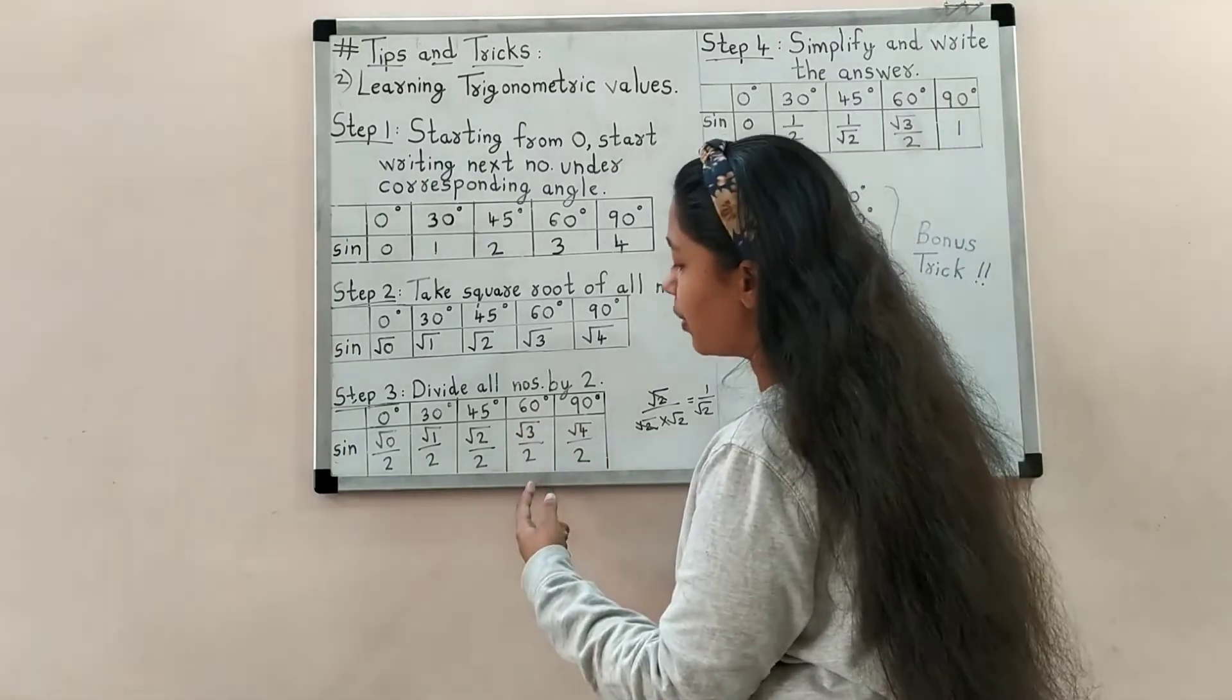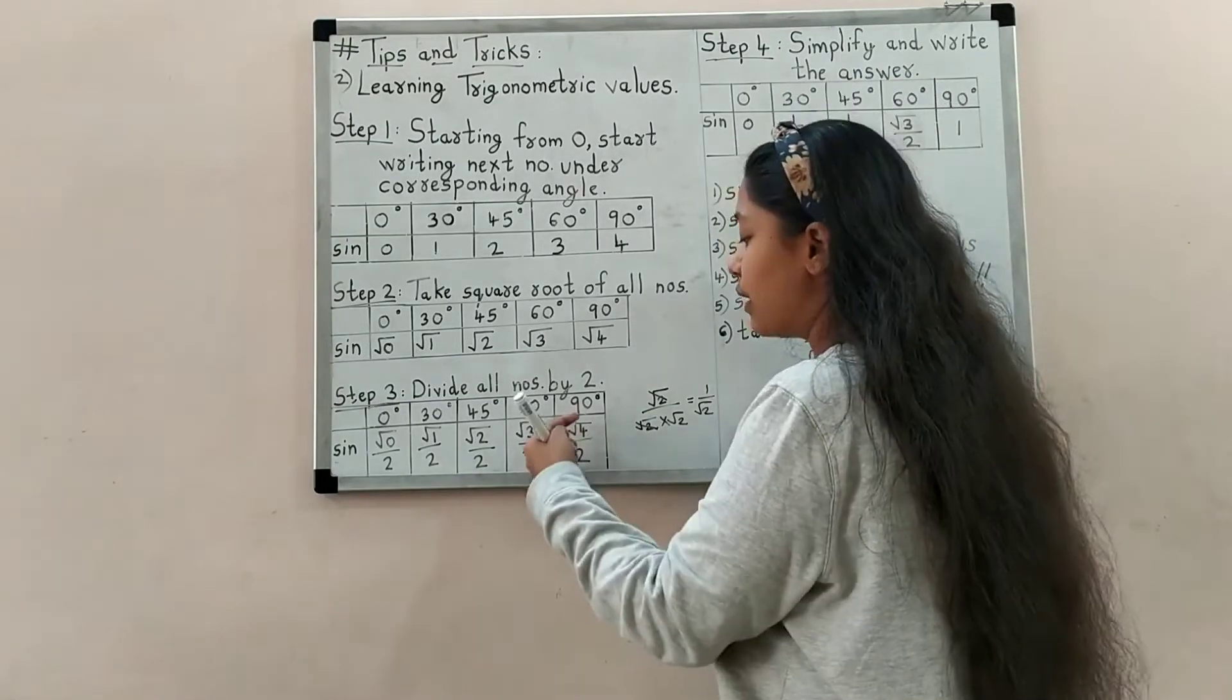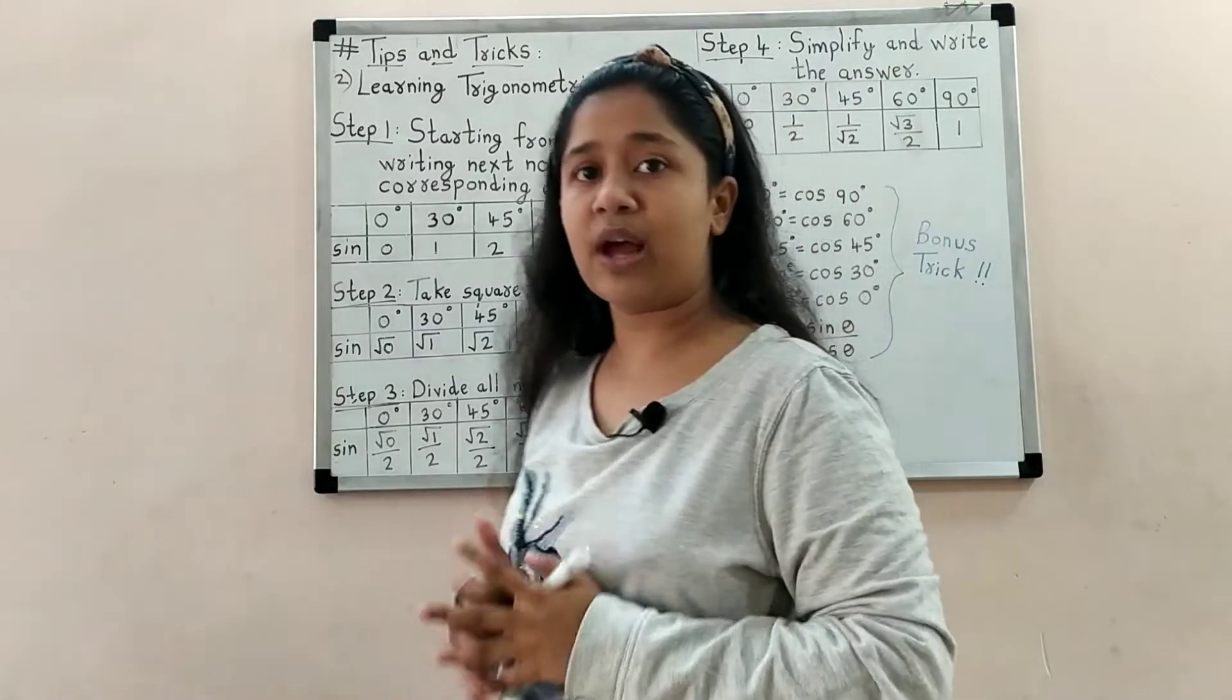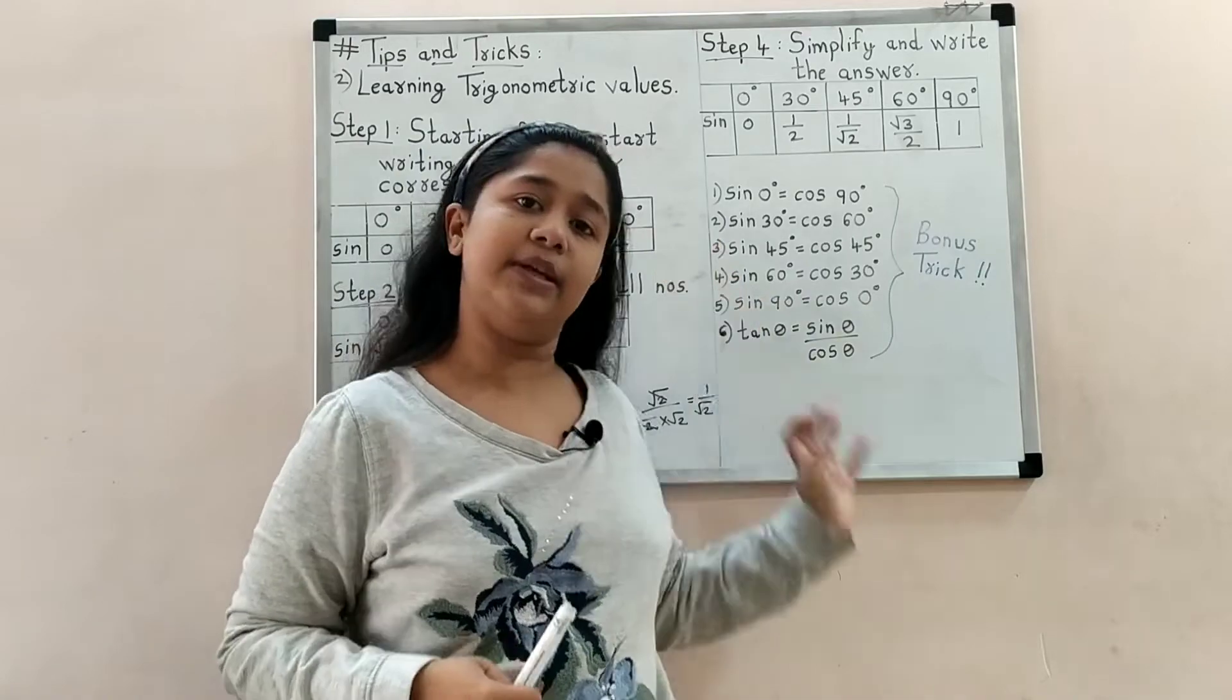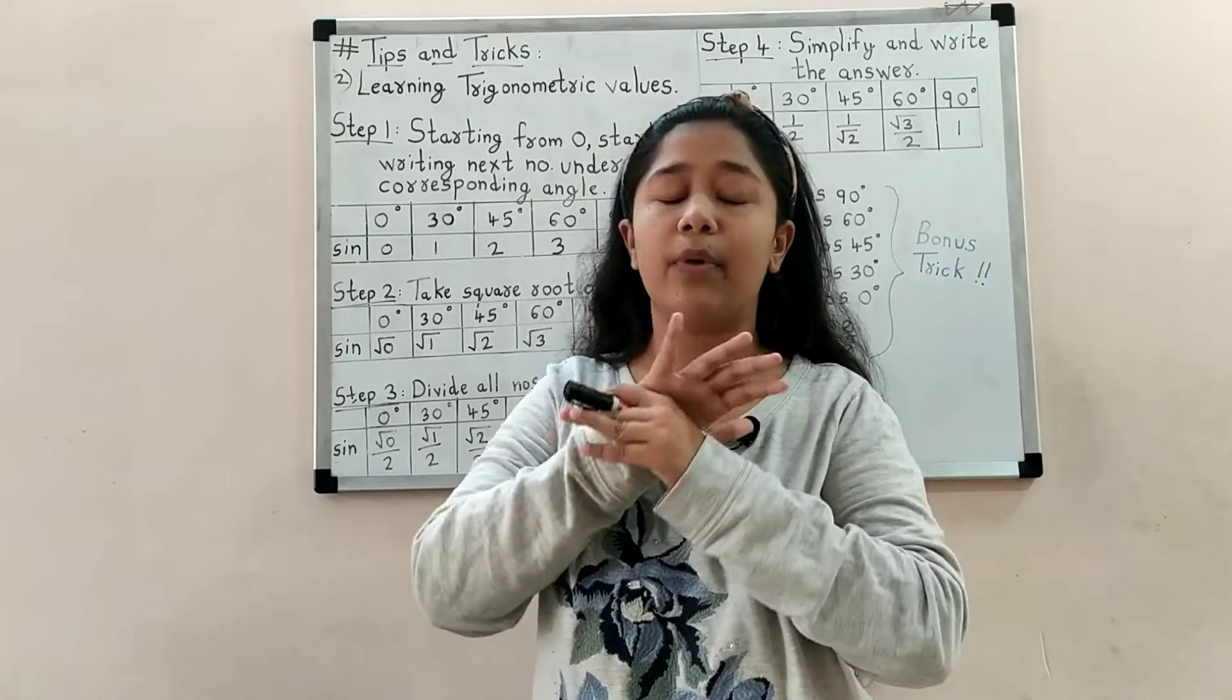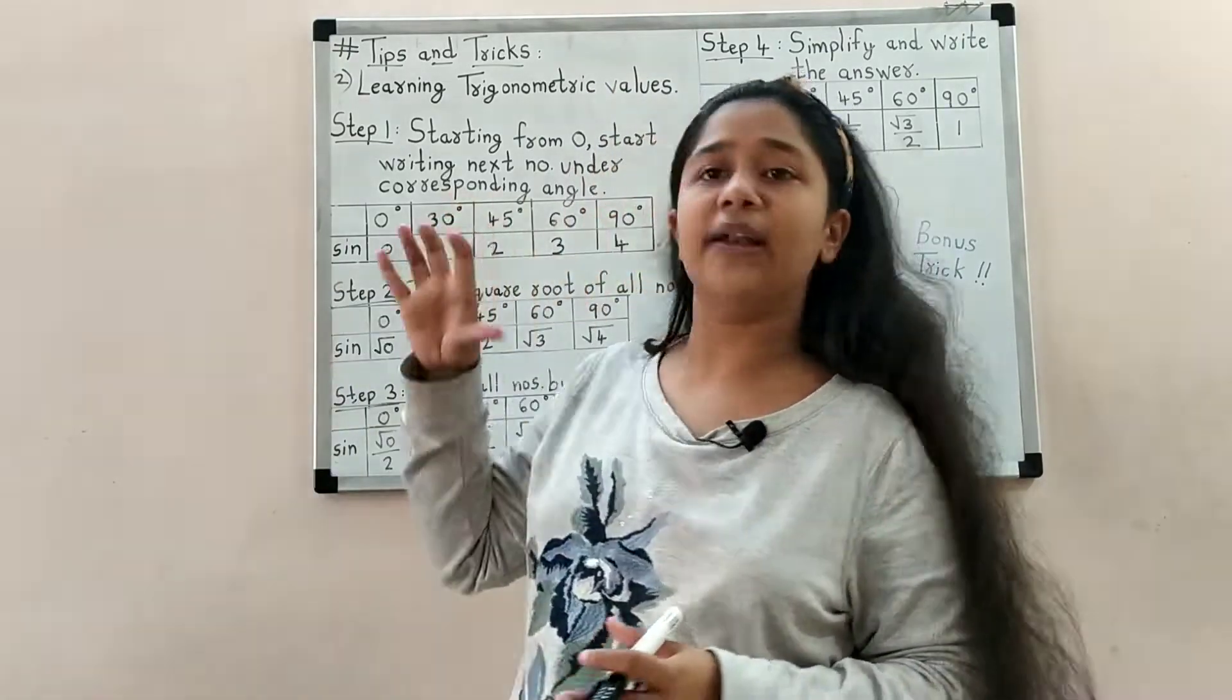Next is square root of 3 upon 2. If we solve this, we get decimal answer, but we don't want decimal, so keep it as root 3 upon 2. Square root of 4 upon 2 - 4 square root is 2, so 2 upon 2 equals 1. These are all the sin values. When you practice trigonometry so many times, you will remember a lot of values automatically.